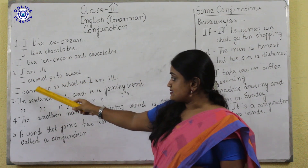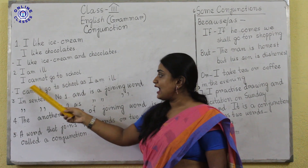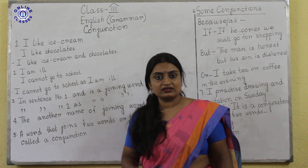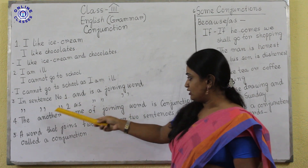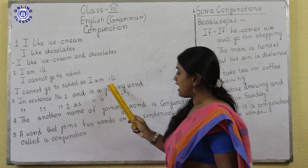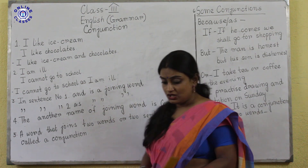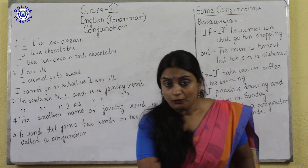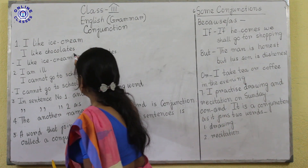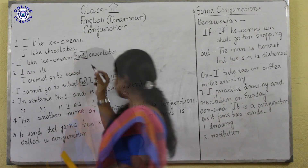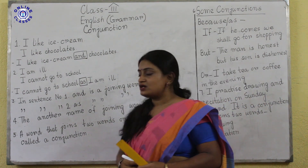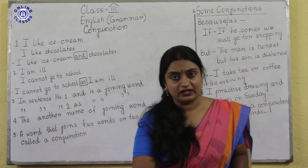In the next sentence: I am ill. I cannot go to school. How can we join this? We join it like: I cannot go to school as I am ill. So in these sentences, 'and' and 'as' — these two words are actually joining words.